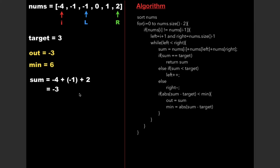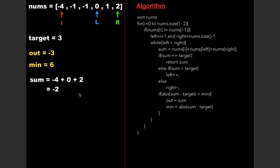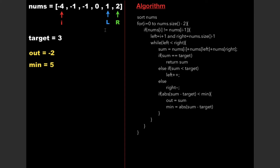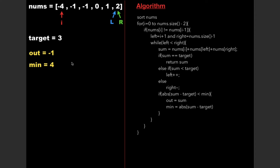We continue the iteration. The next sum calculation yields the same value, so we increment left again. Now sum becomes -2, and the absolute difference with target is 5, which is less than 6, so we update out to -2 and min to 5. Next, sum is -1, giving an absolute difference of 4, so we update out to -1 and min to 4. Left is no longer less than right, so we exit the while loop and increment i.